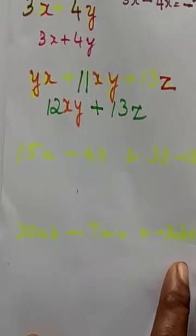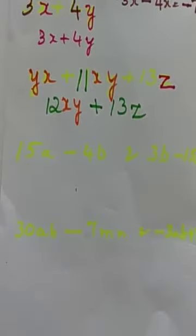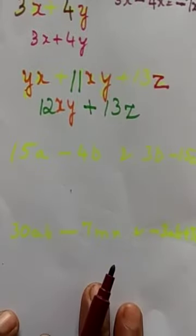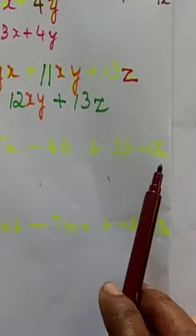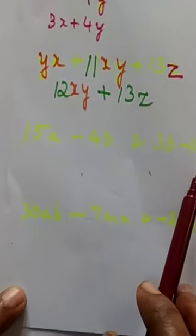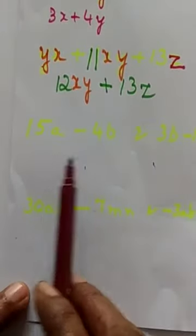Then they have asked us to add two binomials. See, 15a minus 4b, this is one binomial. 3b minus 15a.